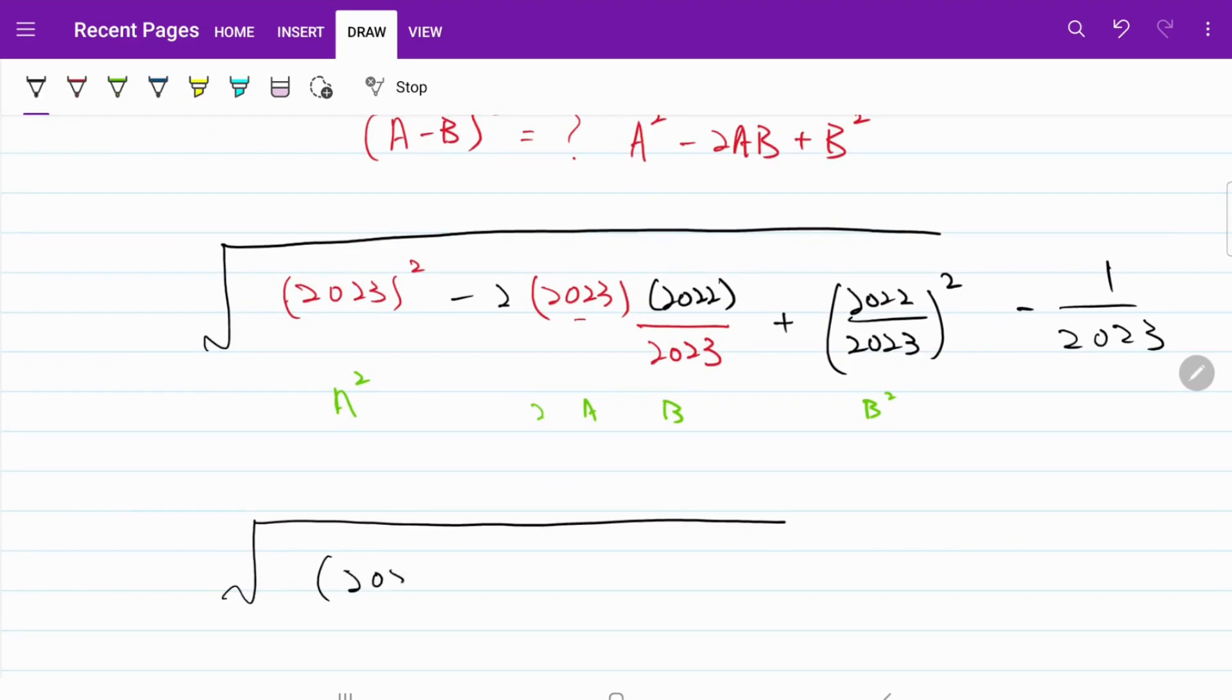So now this becomes 2023 minus 2022 over 2023 squared. And now we can make use of the fact that this square and the square root is going to cancel each other. And we can deal with the fraction at the back.